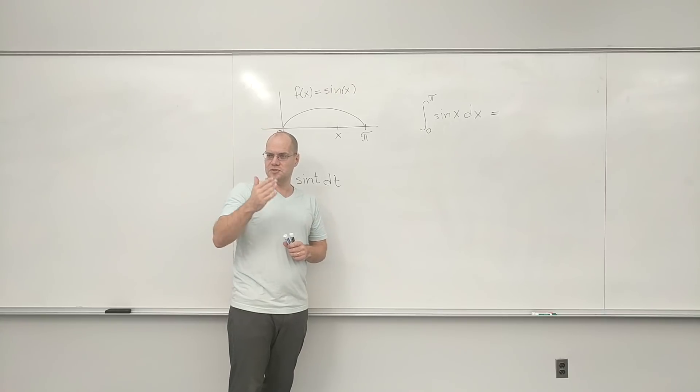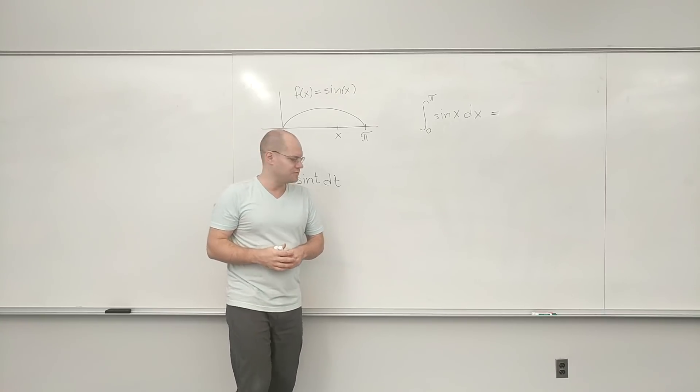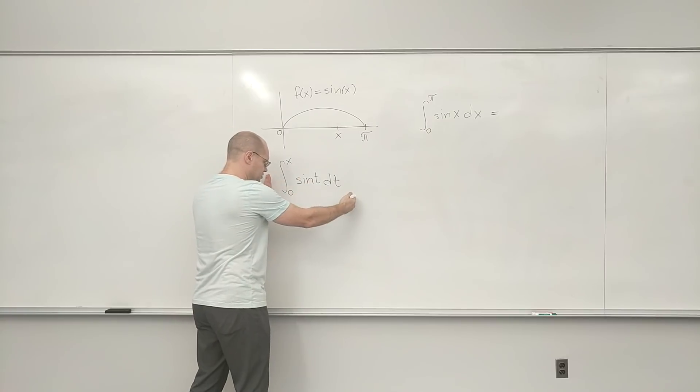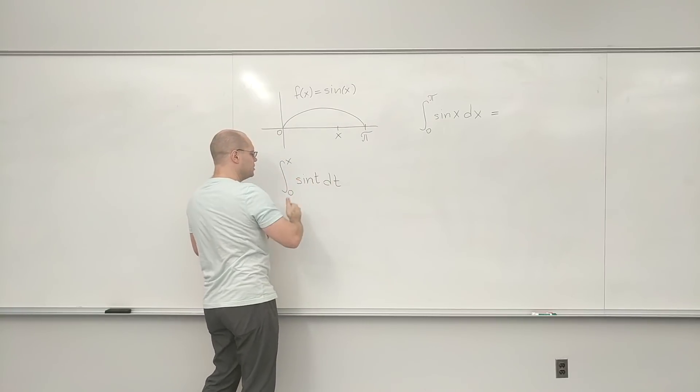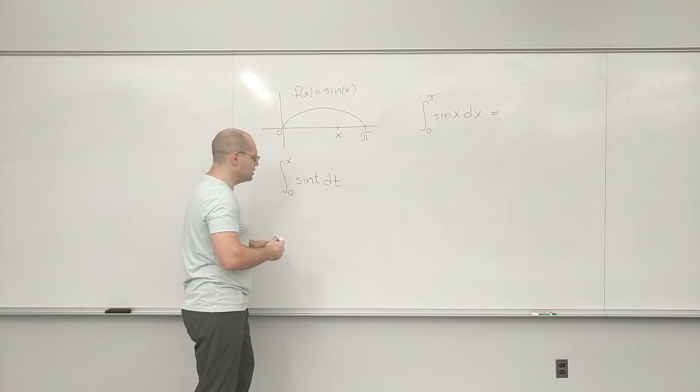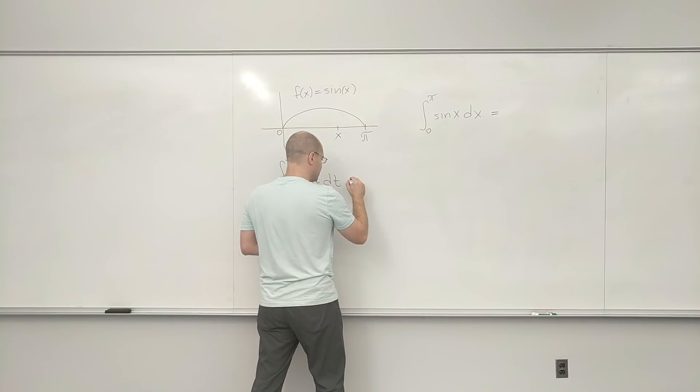And that's another great example for how integration occurs, which is you make a guess that's close and you realize it's not quite. And then you have to make an adjustment. And in this case, the adjustment was throwing a minus sign in front of it. So this function represents the area from zero to x. We know that its derivative is sine. And from that, we conclude that it's minus cosine.